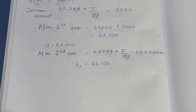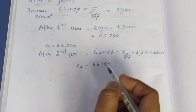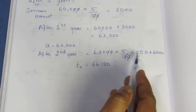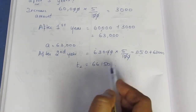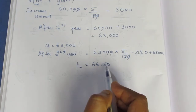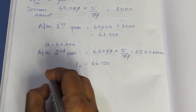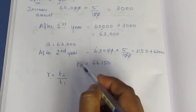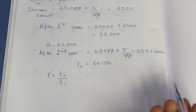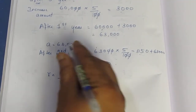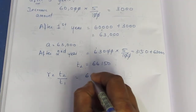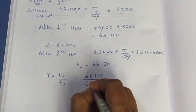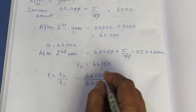Looking at the first year and second year values, we can see this is a GP. To find the common ratio R, we compute T2 divided by T1: 66,150 divided by 63,000.